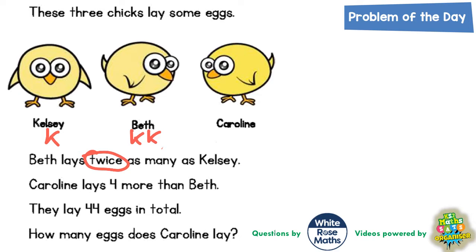Caroline lays four more than Beth. If Beth is two lots of Kelsey, in other words KK, then four more than that would be KK plus four. To recap: we'll call Kelsey the letter K, Beth is twice as many so that's two lots of K, and Caroline is four more than Beth — KK plus an extra four. It says they lay 44 eggs in total.